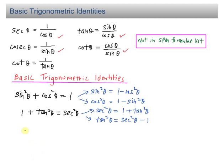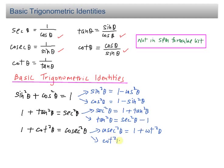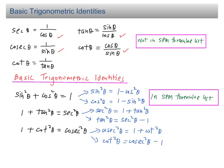The last basic trigonometric identity is 1 + cot²θ = cosec²θ. This identity links cot θ and cosec²θ together, so cosec²θ equals 1 + cot²θ, and cot²θ equals cosec²θ − 1. These three basic trigonometric identities are given in the SPM formula list. However, you are advised to memorize these formulas so that you can master this chapter on trigonometric functions.